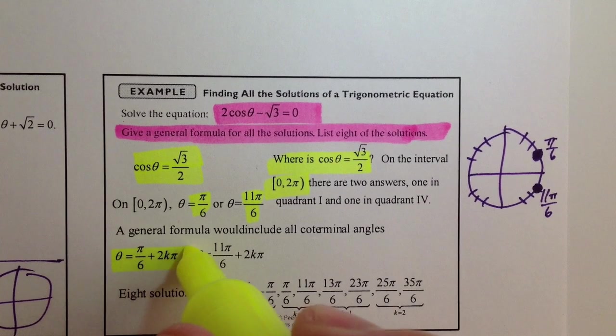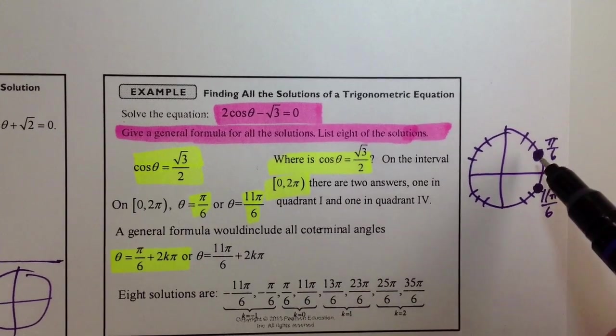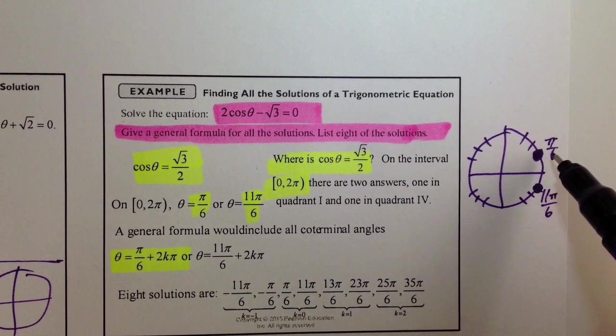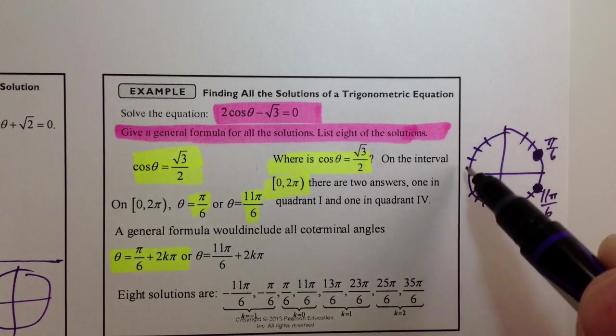you have seen this, every time you go one full revolution around the circle, you get back to the original angle.